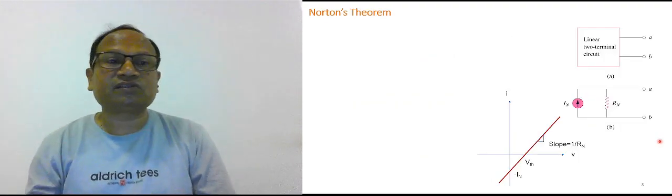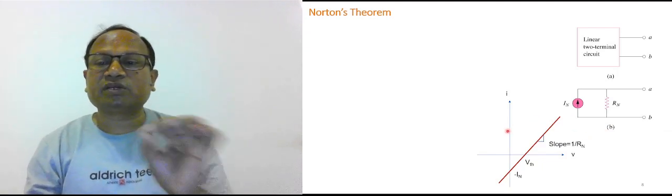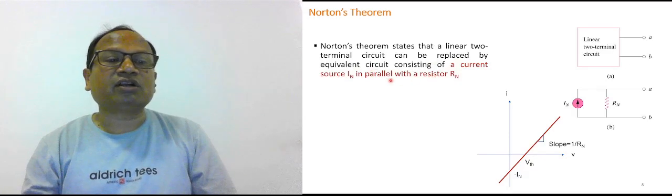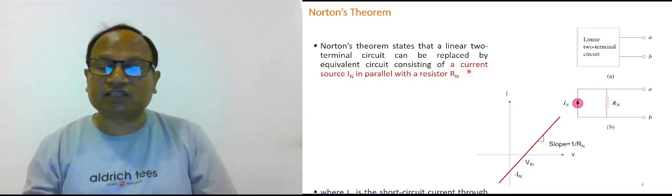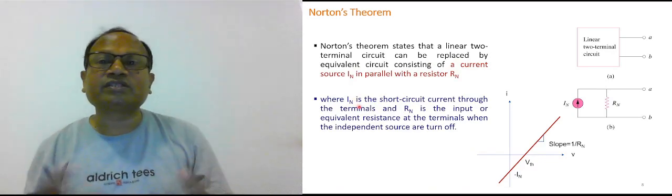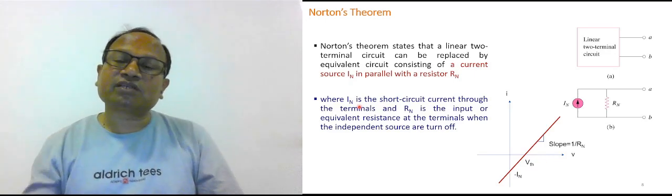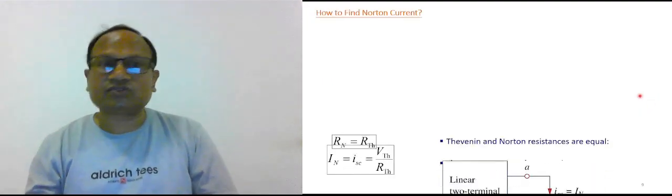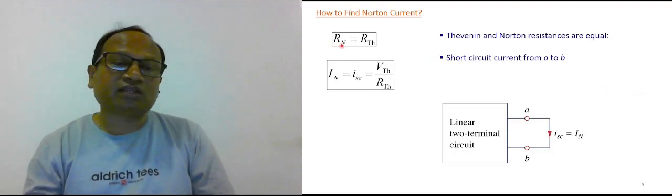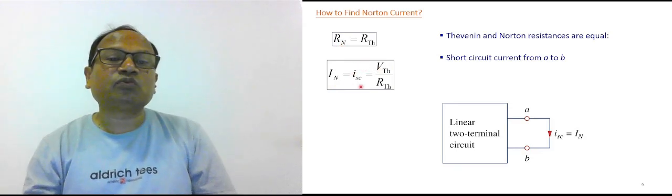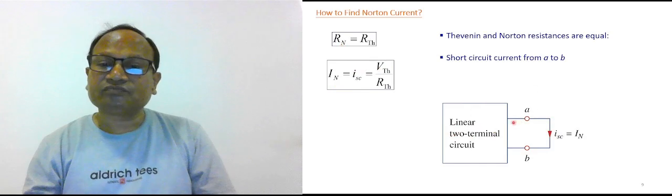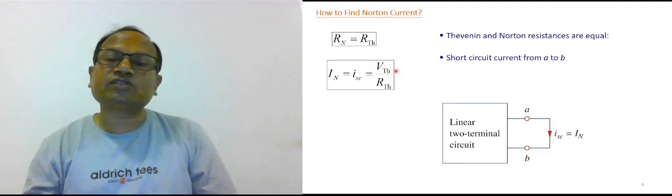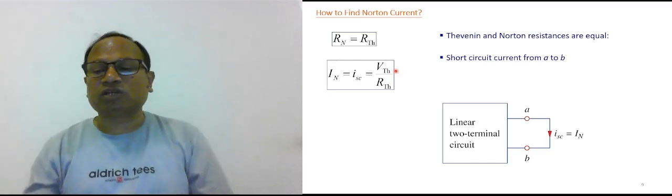Now, Norton theorem. The network must again be linear. In Norton theorem, we replace the network by a current source in parallel with a resistance. This is Norton current in parallel with Norton resistance. Norton theorem is dual to Thevenin theorem: Thevenin voltage is the open circuit voltage, while Norton current is the short circuit current across the load terminals. Thevenin resistance equals Norton resistance. You can also determine Norton current as Thevenin voltage divided by Rth.